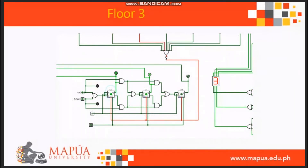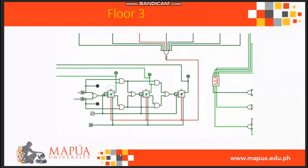It will display the number 2 if the output of the flip-flops is binary 010, which indicates the second floor. The display will show the number 3 if the output of the flip-flop is 011, meaning it indicates the third floor.